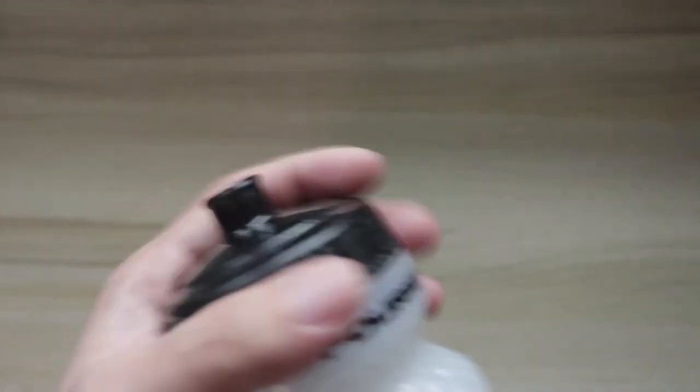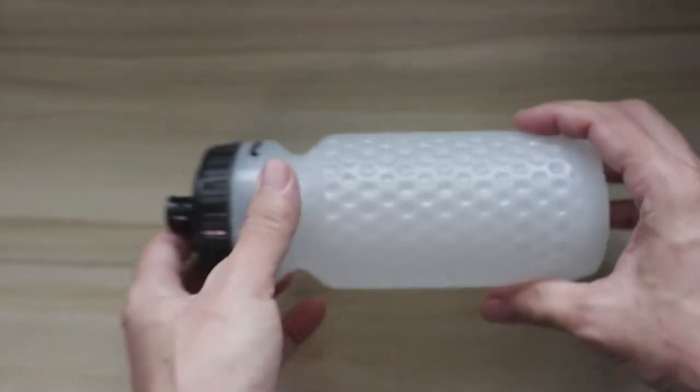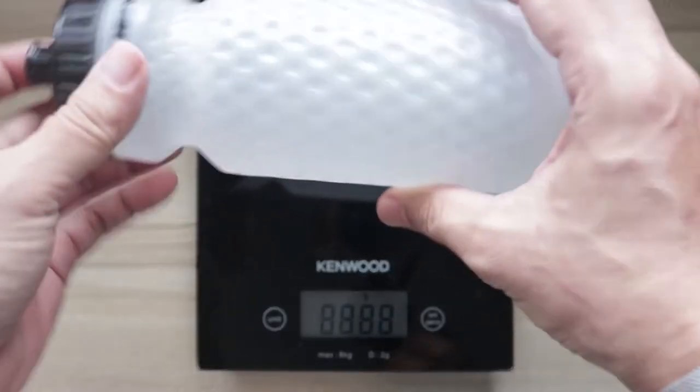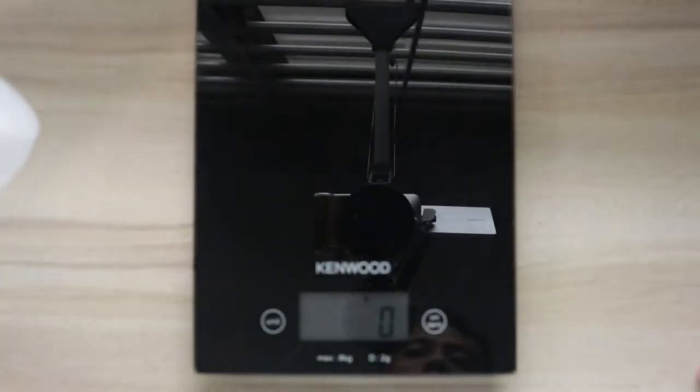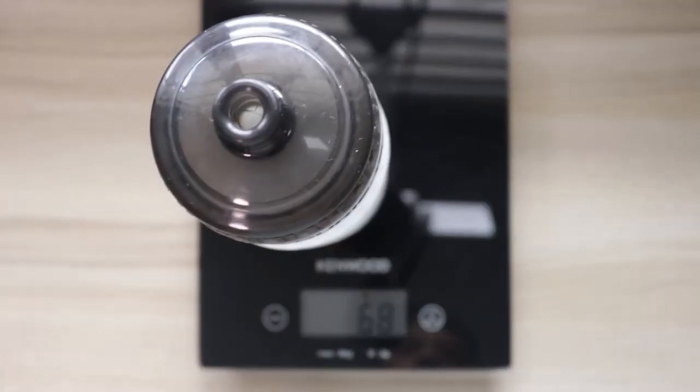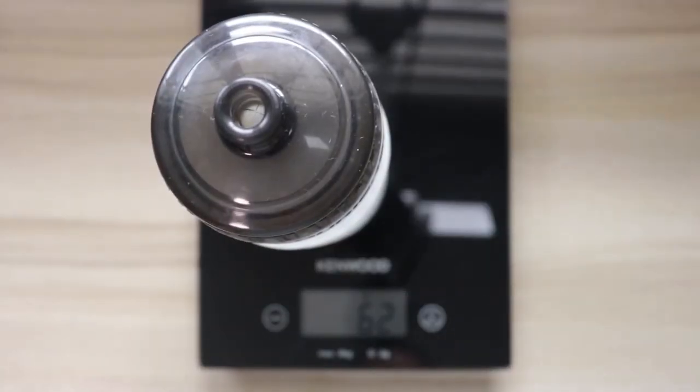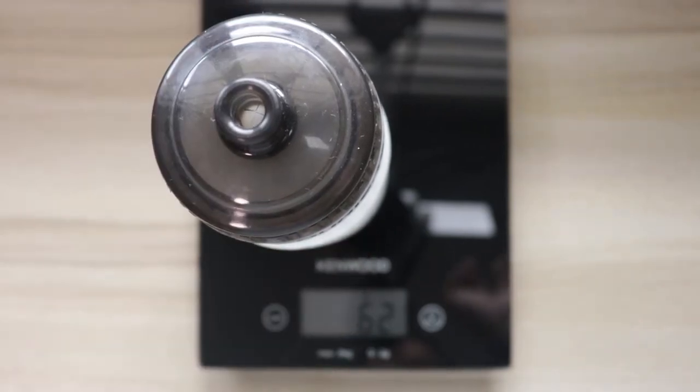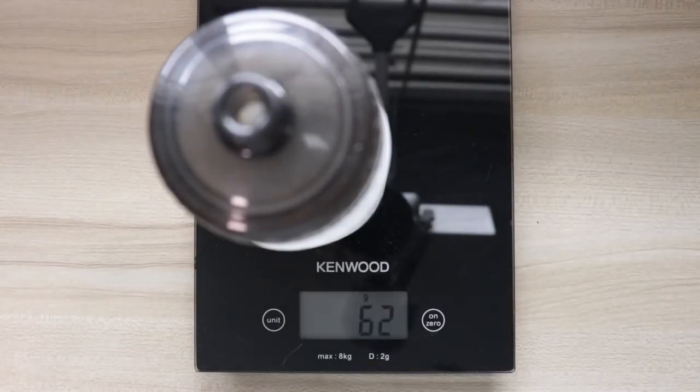Now let's weigh this Fouriers bottle and see how much it weighs. As you can see here, it weighs 62 grams.